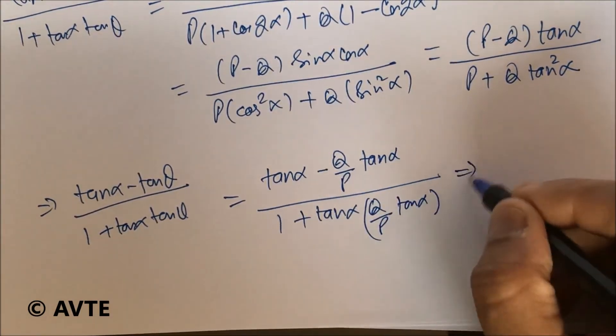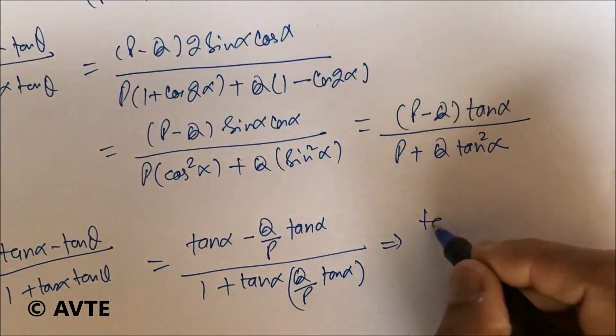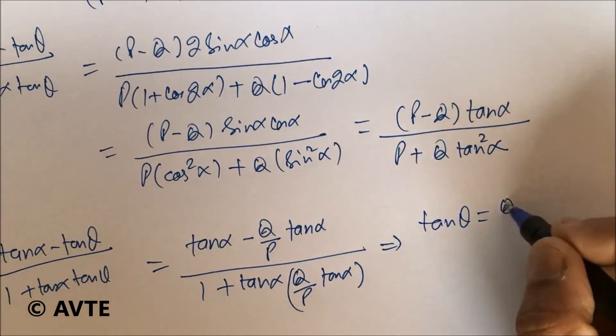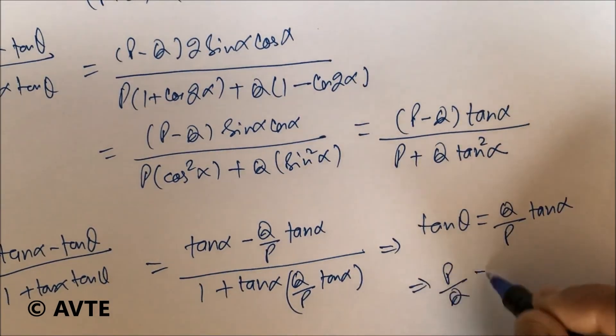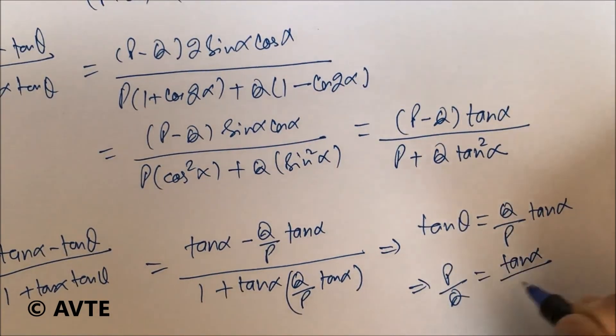By comparing, you can see that we have tan θ equals, so the ratio P over Q is tan α over tan θ.